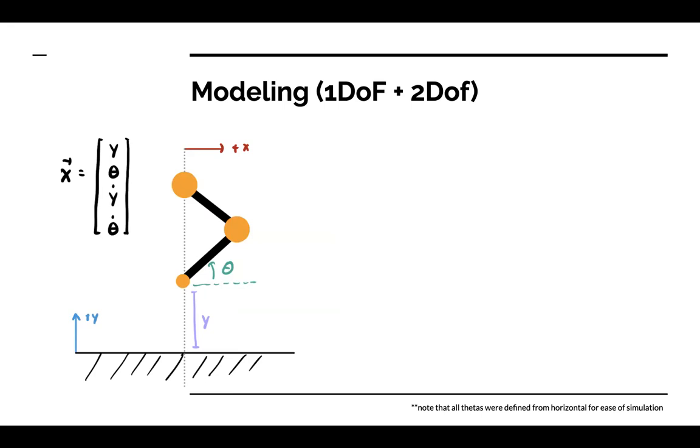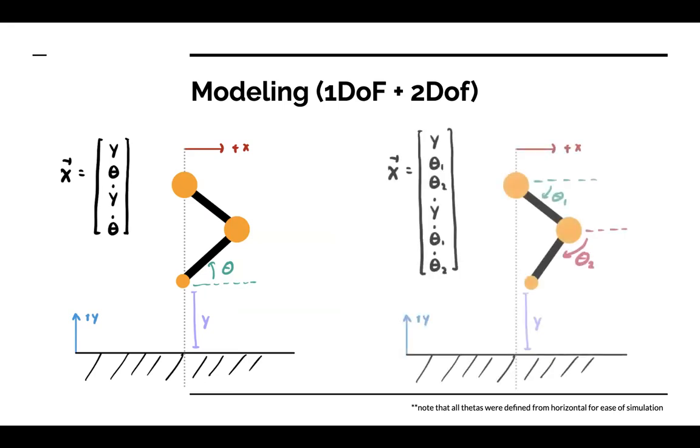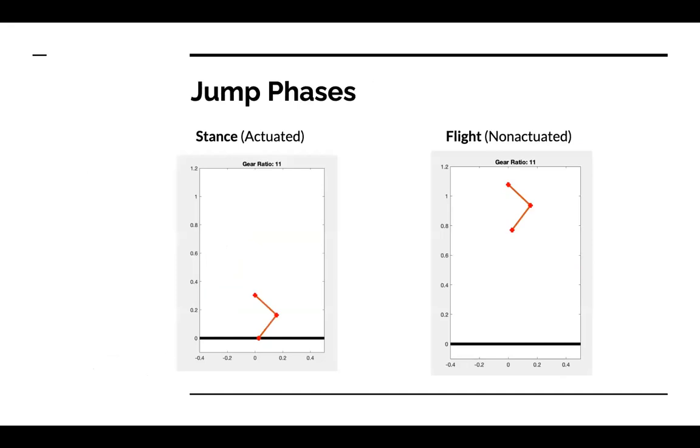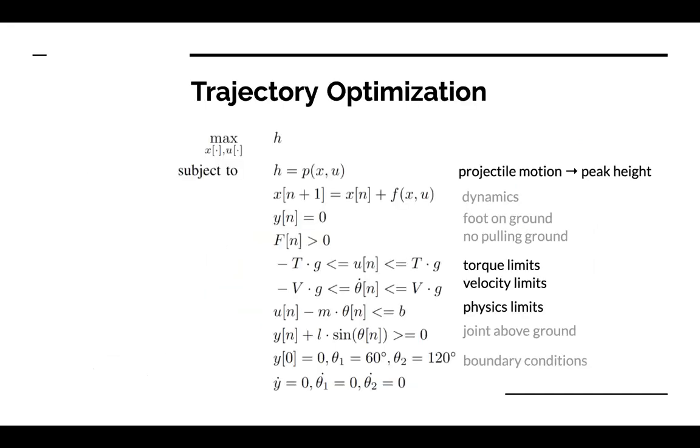In the two degree of freedom case, we added an independent theta at the hip since both joints are now actuated. There are two phases during the jump. First, the stance phase, while the foot is on the ground and actuation can be applied. The second is the flight phase, which is non-actuated. This can be simulated based on projectile motion with the states and actuation from the stance phase as input.